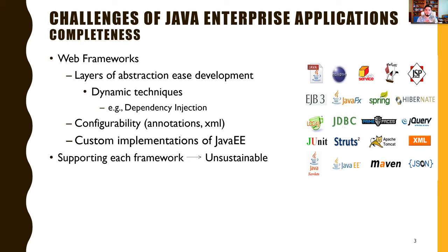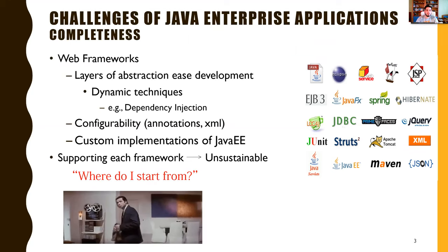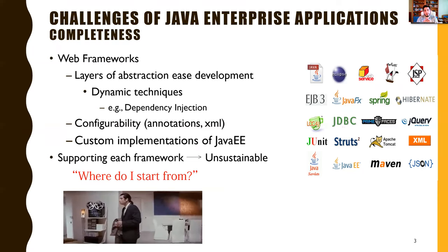Web frameworks use dynamic techniques and rely on external sources to achieve high customizability. They use techniques like dependency injection to achieve inversion of control. This means that most of the essence of the application is not encoded within the Java code itself, but rather in these external sources. So one would need to model all this extra-linguistic information in order to get an analysis with very high completeness. A typical static analysis does not even know where to start — it gets confused while still trying to find the entry points to the application.